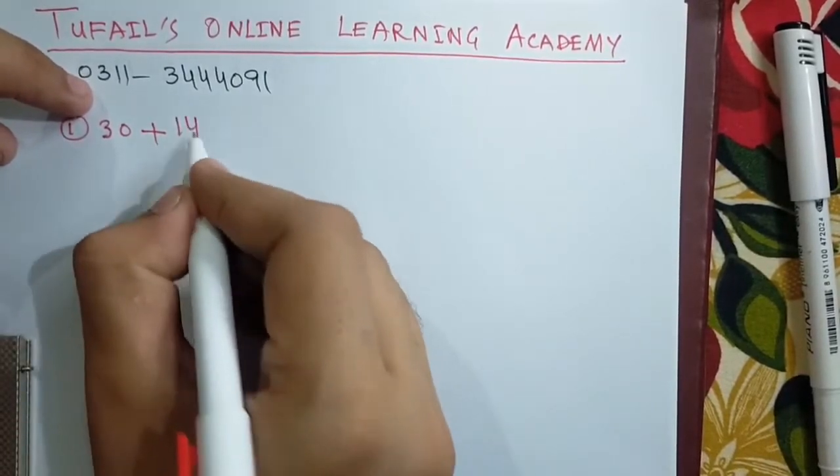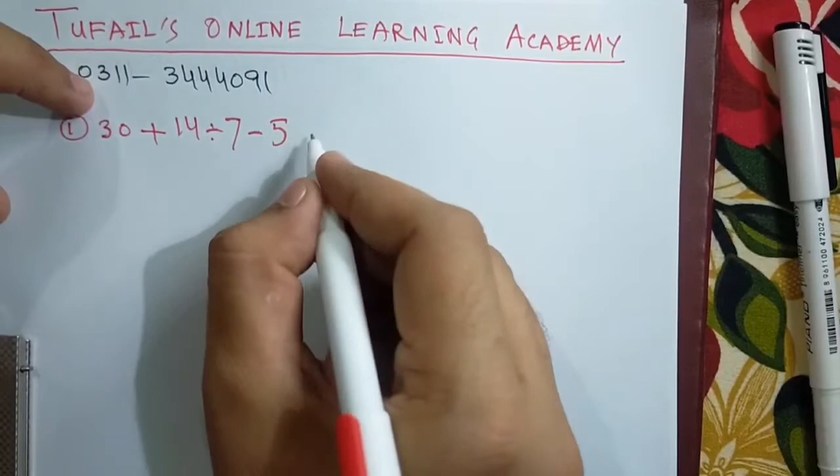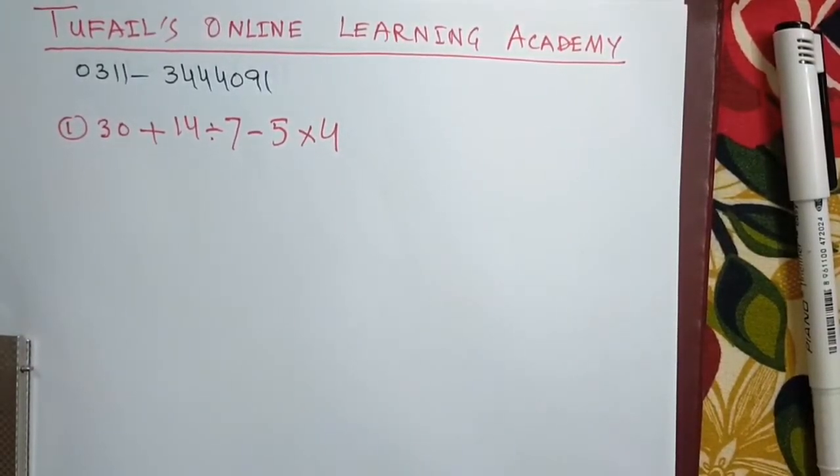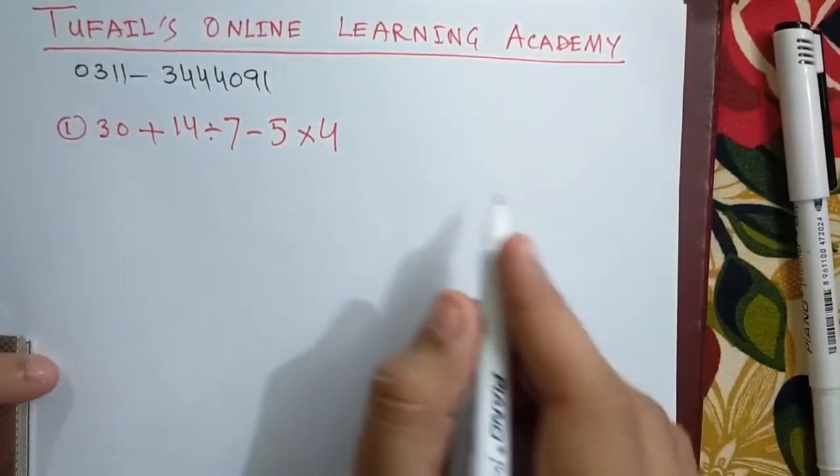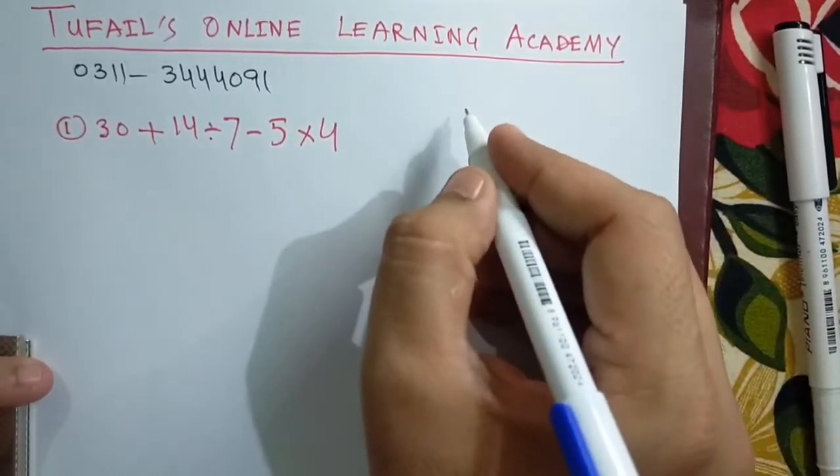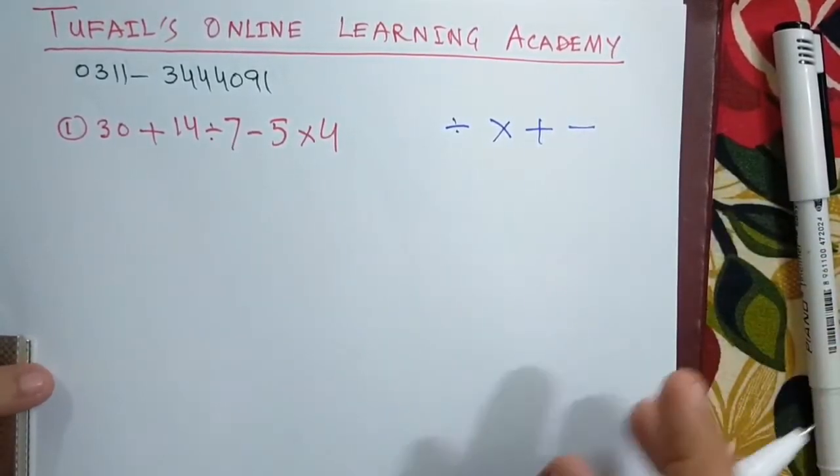Let's go towards some sums and we will solve it. 30 plus 14 divided by 7 minus 5 multiplied by 4. Now there are all four basic operations involved, and first of all we will solve division because according to order there's turn of division to be solved first: division, multiplication, addition, and then subtraction.